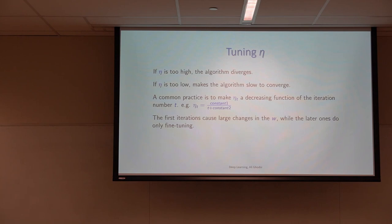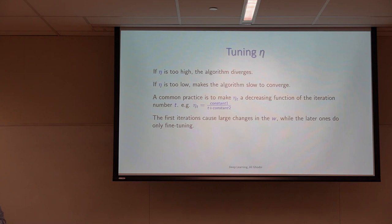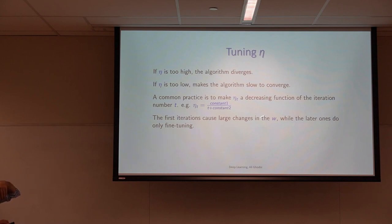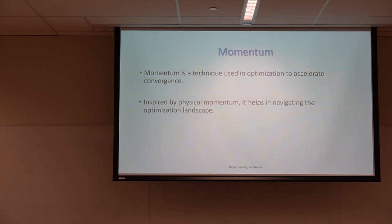A tip about learning rate: it's more desirable if the learning rate at the beginning is large and becomes smaller and smaller as we get closer to the minimum. There are many ways to do this, but a simple one used in practice is: learning rate equals a constant divided by (T plus another constant), where T is the iteration. As T gets larger the learning rate gets smaller and smaller.